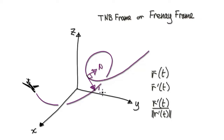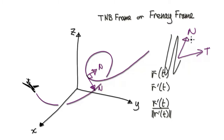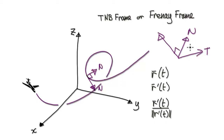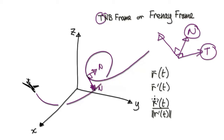Any two vectors will always form a plane — a flat 2D plane. If you want a third vector, you take the cross product of the two. This third vector will always be orthogonal to both. So: differentiate the position vector to get the tangent, differentiate the unit tangent to get the normal, and take the cross product of the tangent and normal to get your binormal vector.